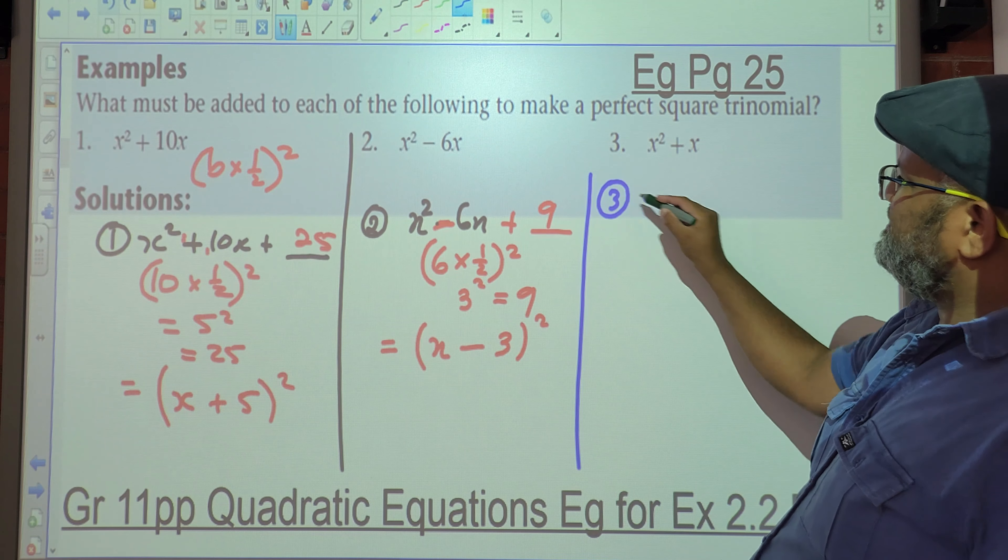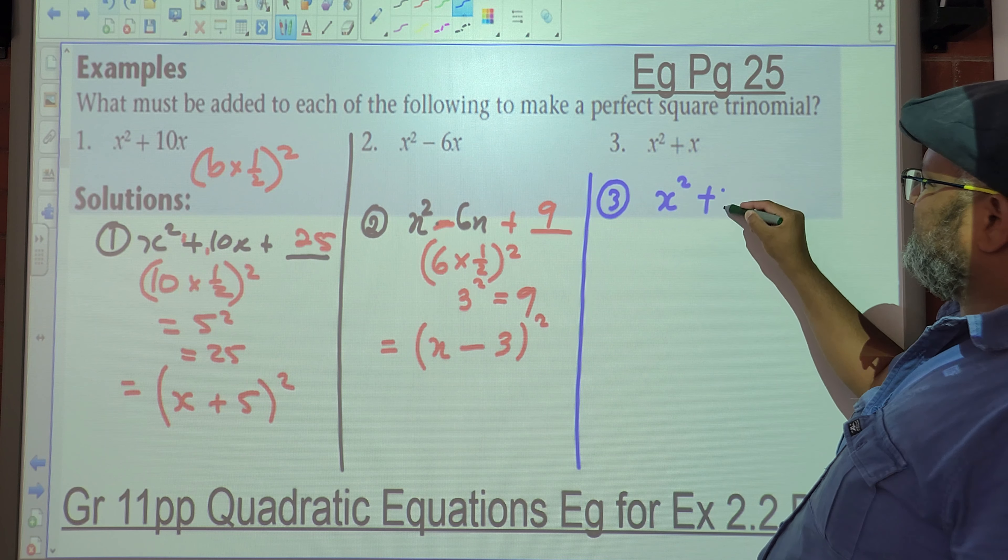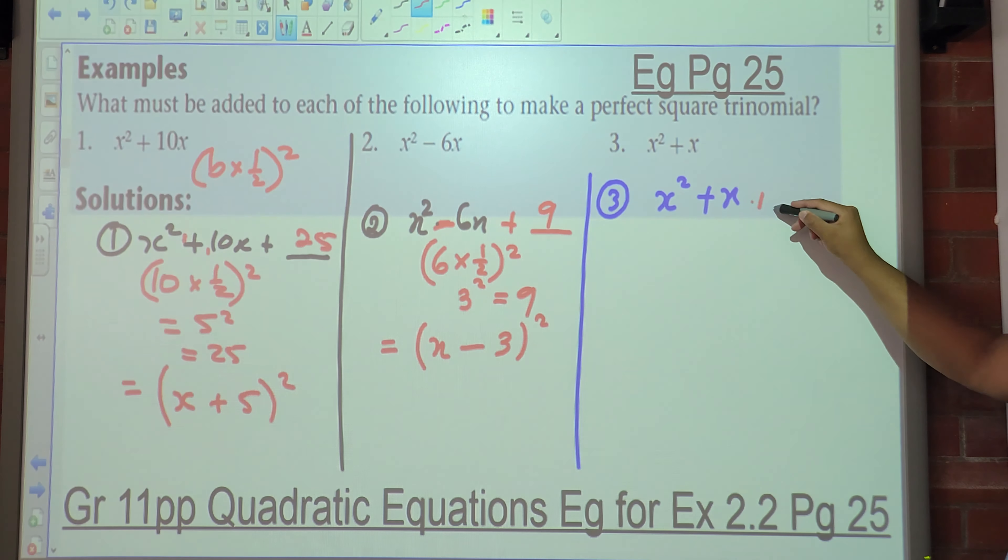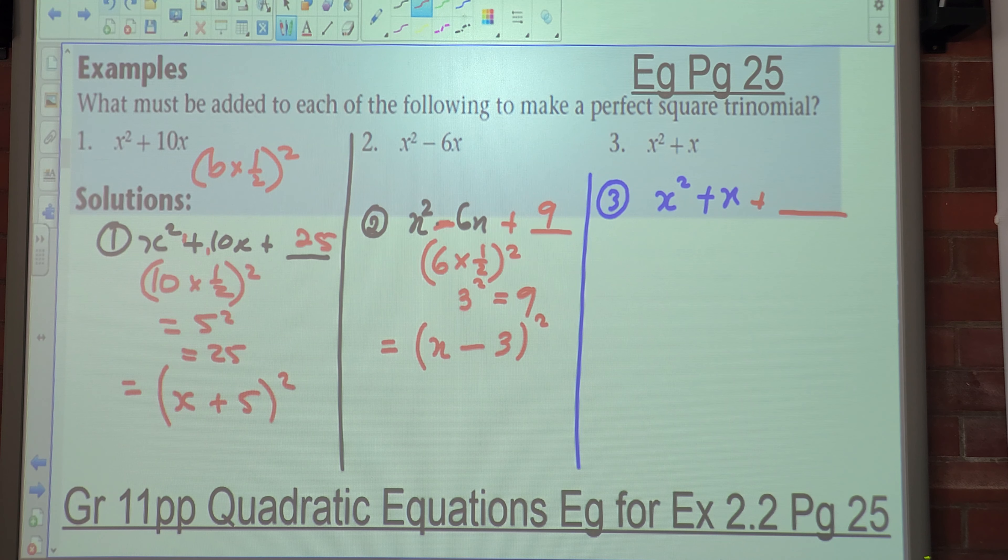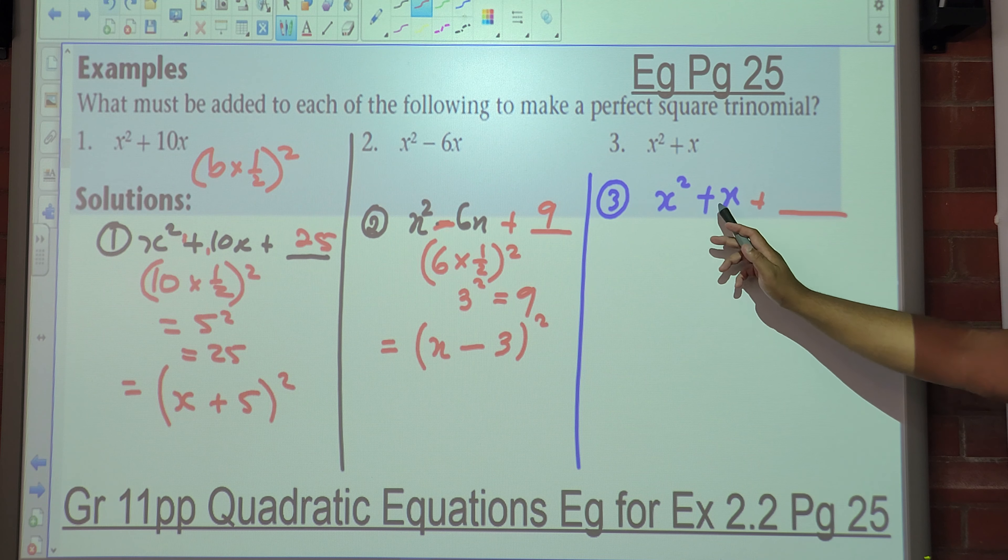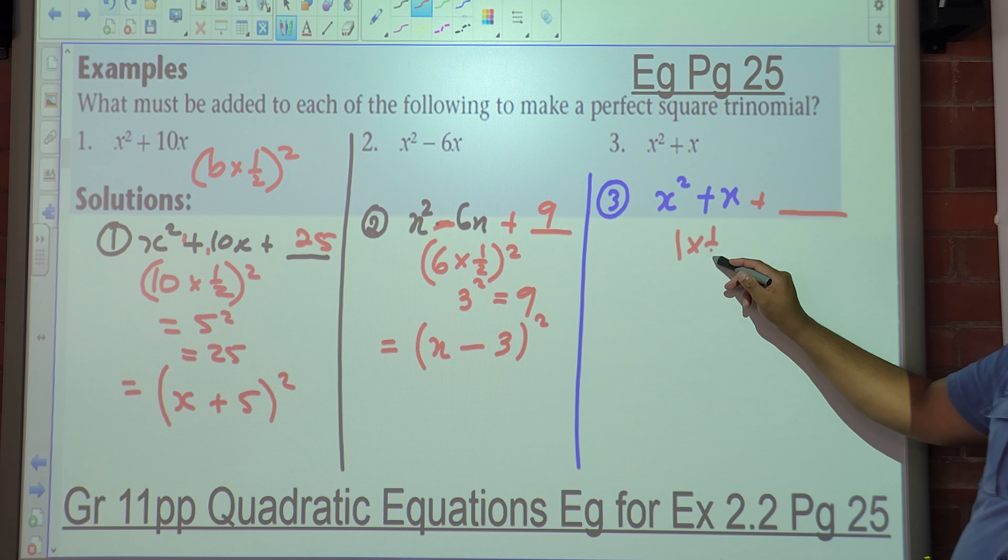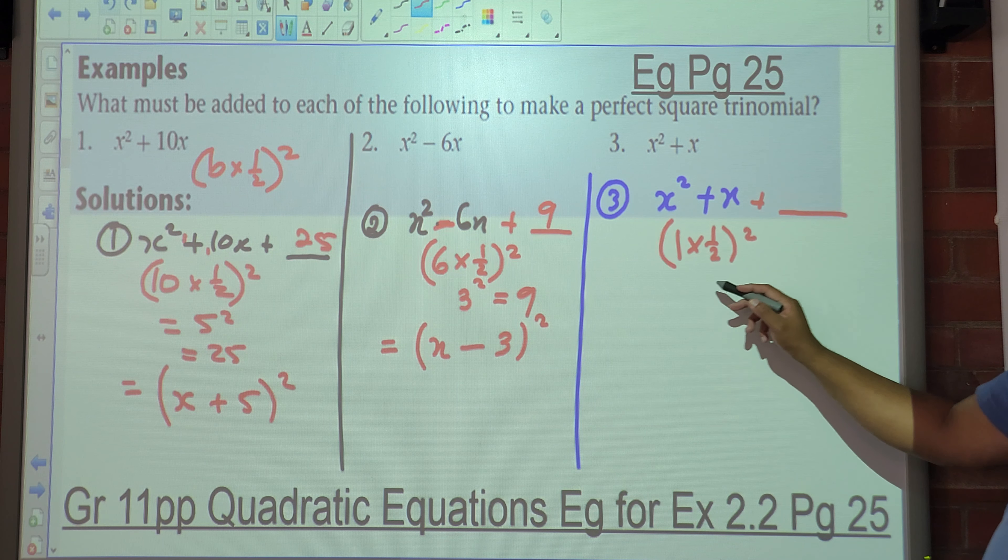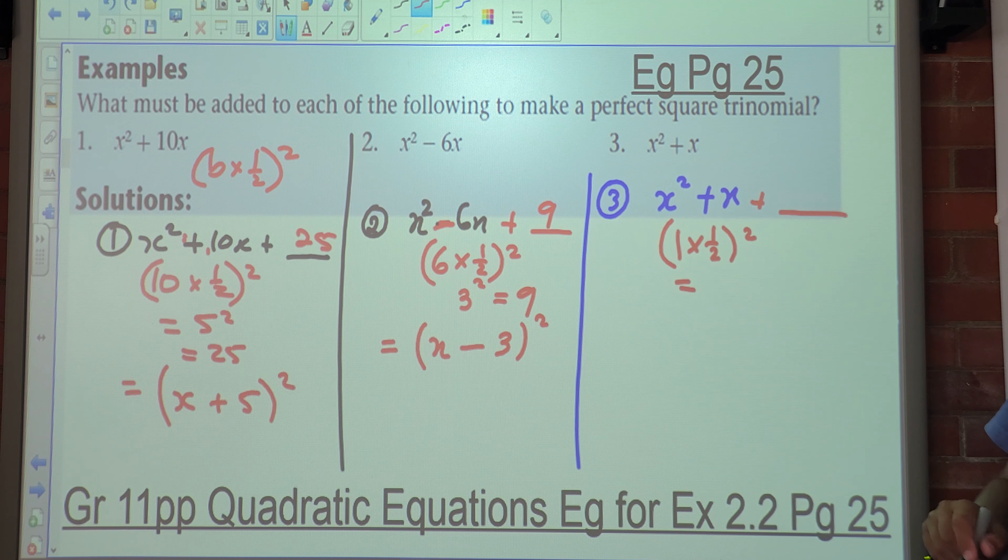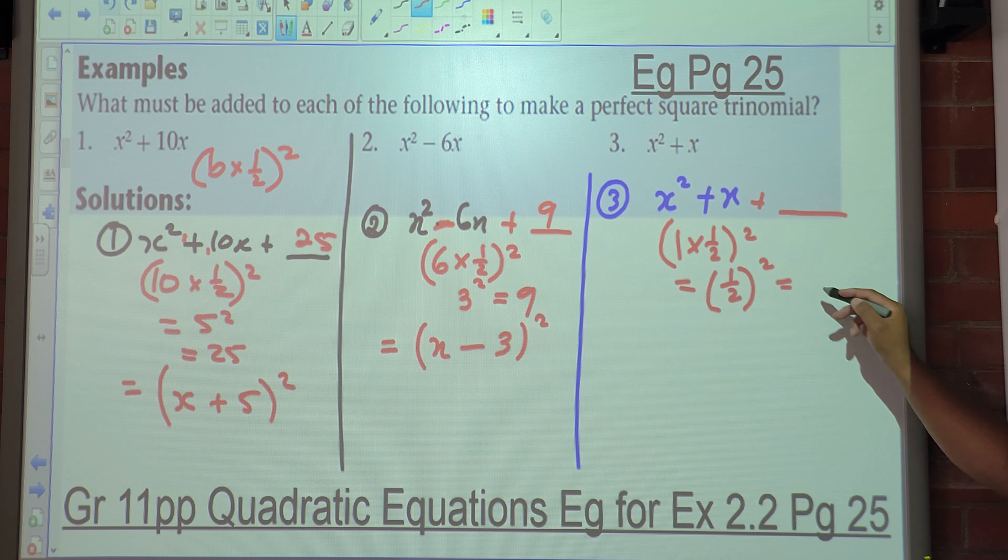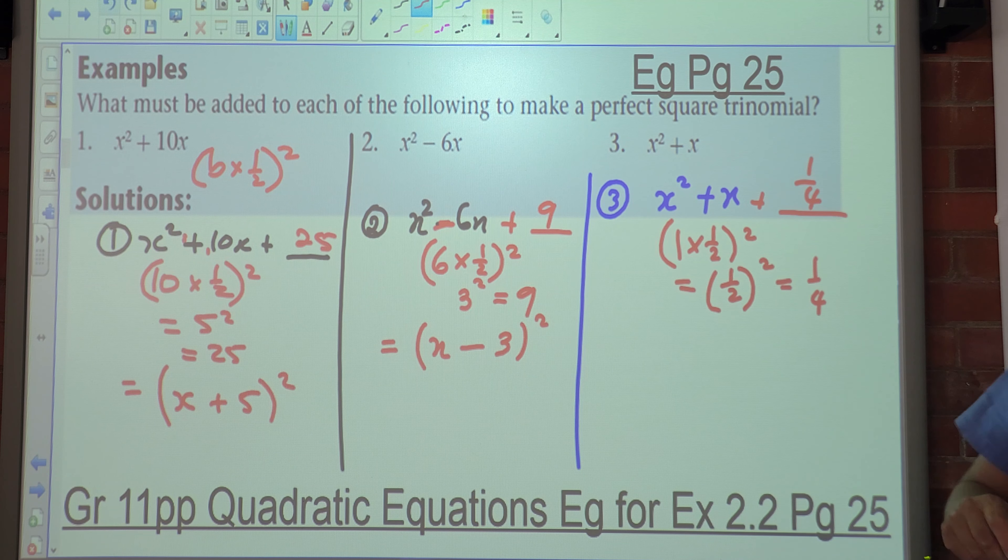Let's look at number three. We've got x² + x. The question is, what must be added here to complete the square? So what's your b value here? One. So it's one times half, and it must be squared. What's one times half? One half squared? Quarter. So quarter must be added to x² + x to get the perfect square.